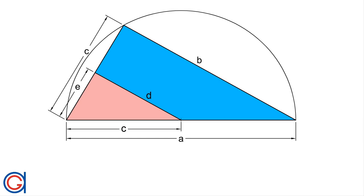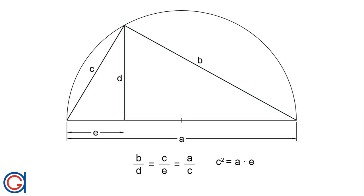According to the Thales theorem, if the angles are the same, then the sides must be proportional. In other words, B divided by D is equal to C divided by E is equal to side A divided by side C. From this relationship we can extrapolate that C squared is equal to A times E by cross multiplying.